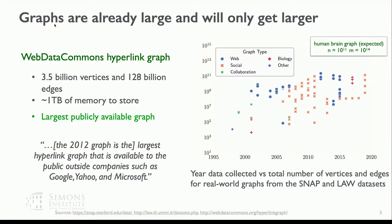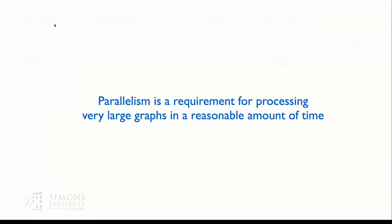We need sublinear algorithms, parallel algorithms — we basically can't get away with running sequential algorithms on these graphs. We should try to avoid looking at the whole input if possible. The main point is that you need to use parallelism in order to actually process these graphs in a reasonable amount of time. If you ran a sequential algorithm, it would take hours to days with no hope of getting your answer back in a reasonable amount of time.